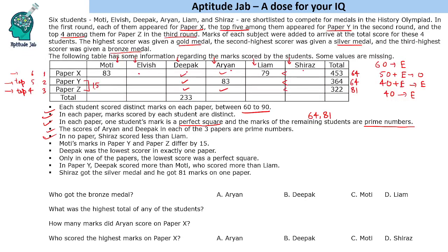A difference of 15 is odd. Odd minus odd is even, and even minus even is even — but odd minus even is always odd. So one of Moti's scores must be odd and the other even. In paper Z, all values are odd numbers. Therefore Moti must get the odd score in Z and the even score in Y. The only even number available between 60 and 90 is 64, so Moti scores 64 in paper Y and 79 in paper Z.